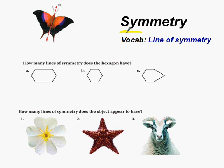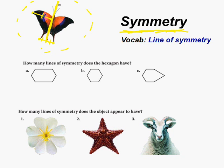Welcome to the lesson on symmetry. Let's start off with a definition and example. If we look at this butterfly, the line of symmetry is line M. It goes right through the butterfly, and each side is the same — a mirror image, like a reflection. The distance from each point to the line of symmetry is equal on both sides. The line of symmetry cuts a shape in half, and on each side there is a reflection.